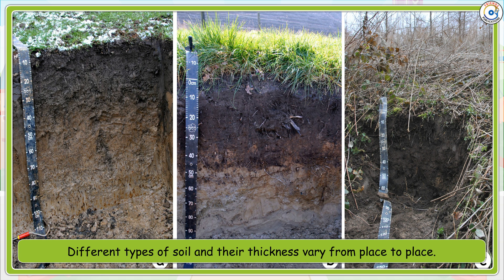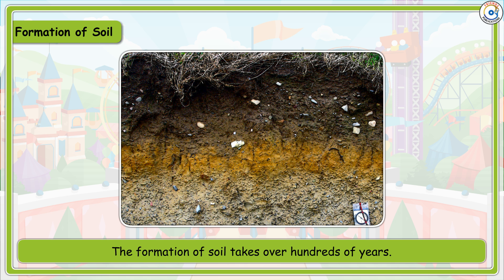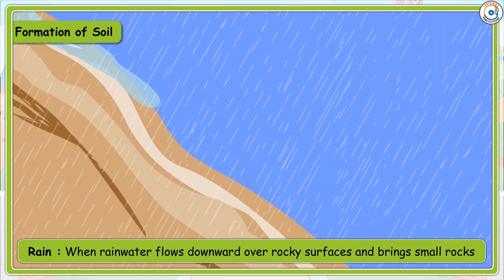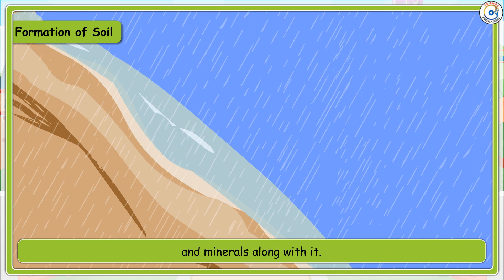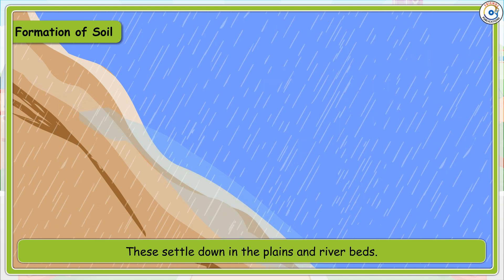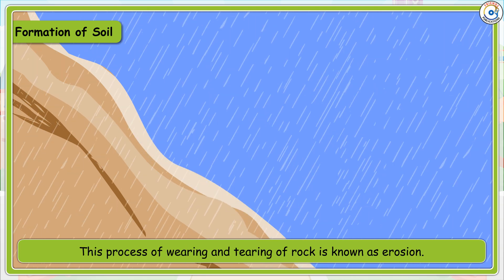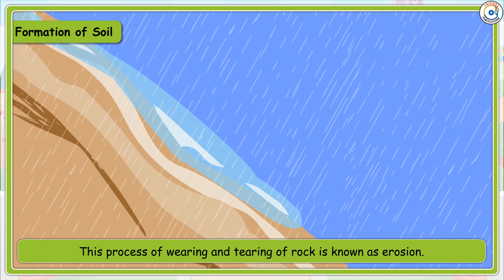Different types of soil and their thickness vary from place to place. The formation of soil takes over hundreds of years. When rainwater flows downwards over rocky surfaces and brings small rocks and minerals along with it, these settle down in the plains and river beds. This process of wear and tear of rock is known as erosion.